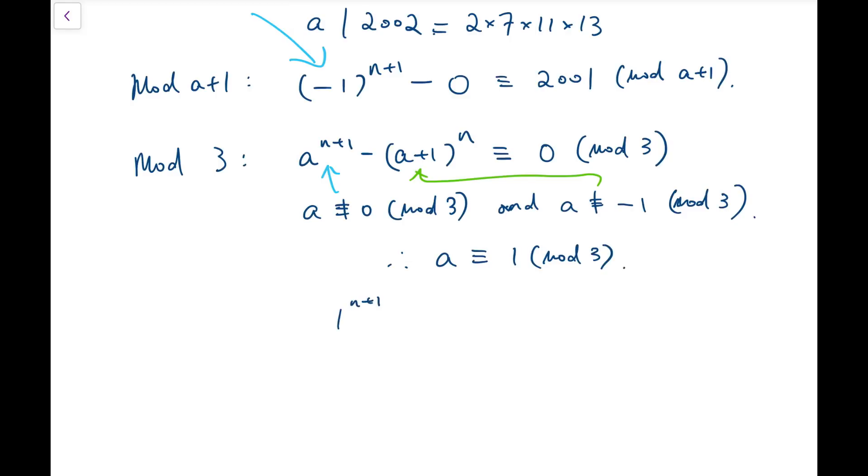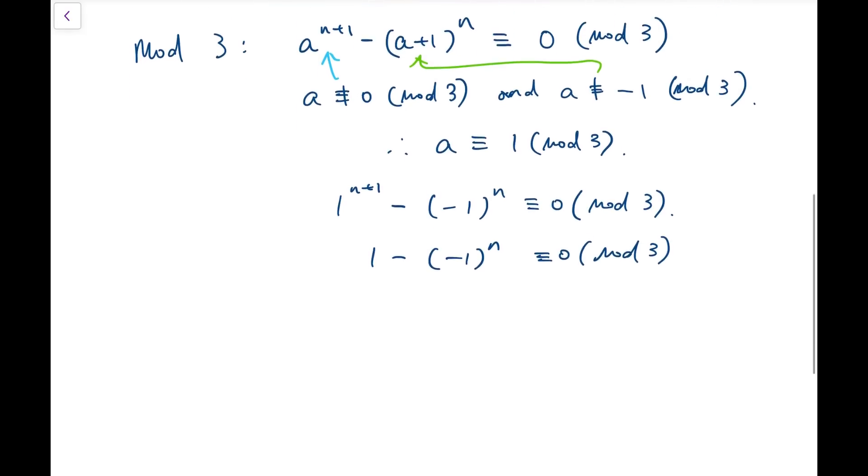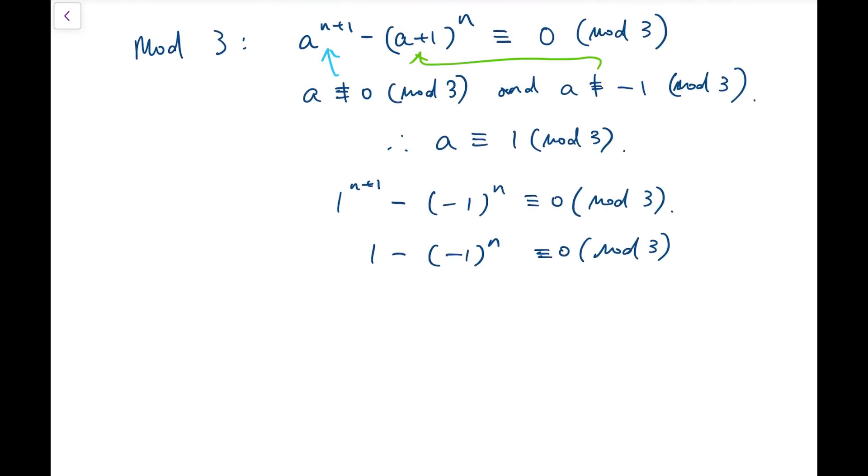So the equation becomes 1 to the power n plus 1 minus 2 to the power n, and that's actually minus 1, all to the power n congruent to 0 mod 3. Simplifying, we have this, and that means minus 1 to the power n must be congruent to 1 mod 3. Now from this, we're going to deduce that n is even, and in fact we've even solved our problem, our previous problem, which is that we wanted to know the parity of n, and now we've managed to find it.